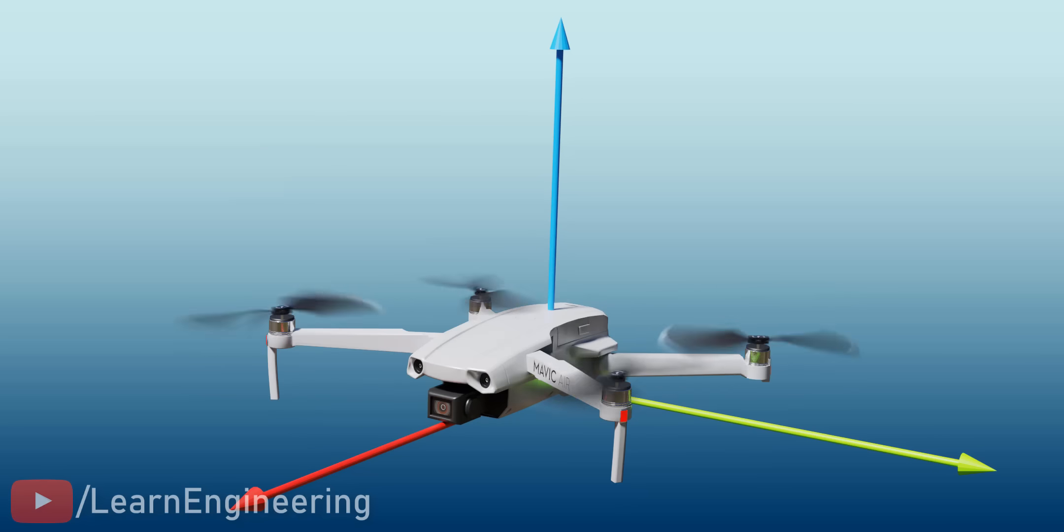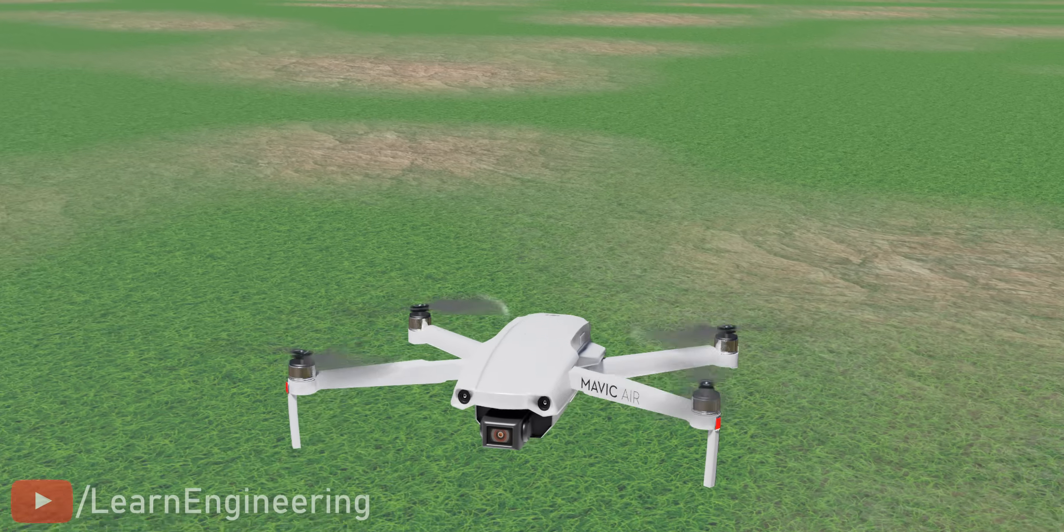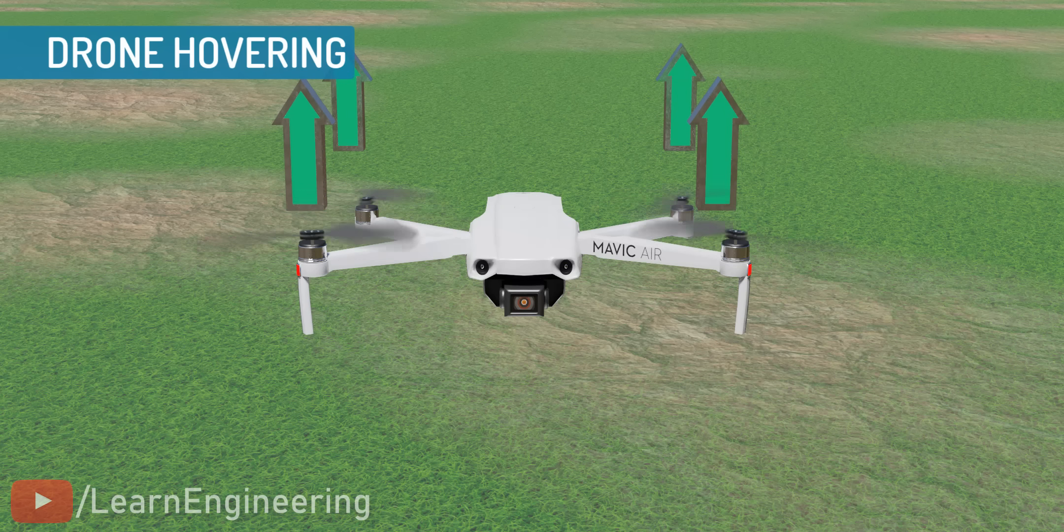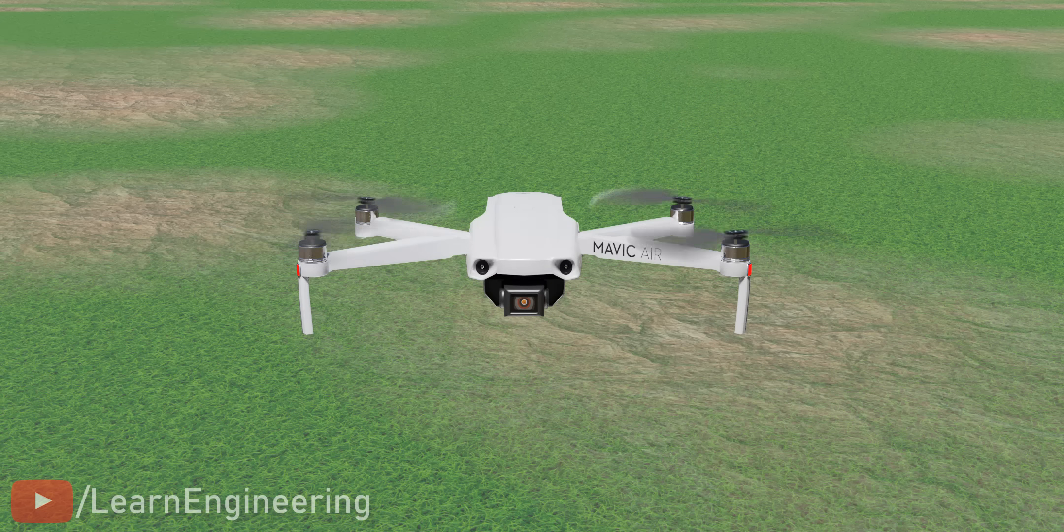Let's consider the scenario of a drone hovering. Your aim is to keep the drone hovering steadily, as shown. For a drone to hover in the air, the upward thrust must balance the downward pull of gravity. Additionally, the net torque should be zero to prevent it from spinning.